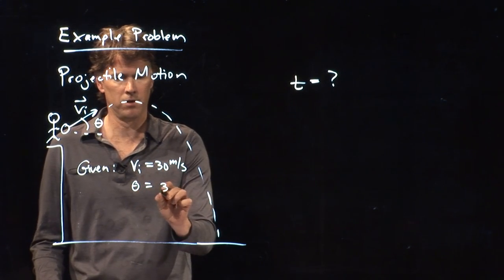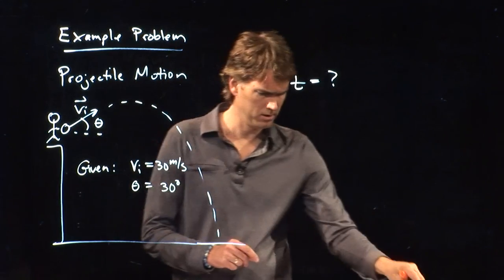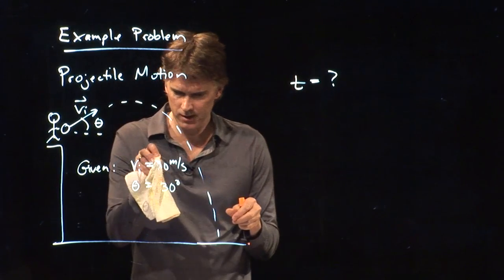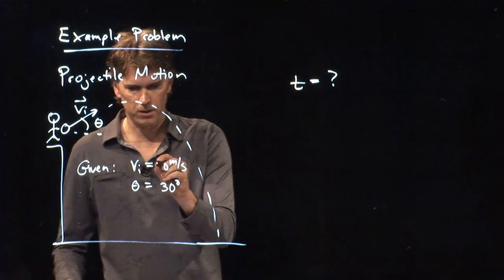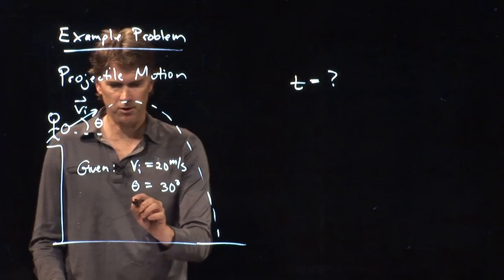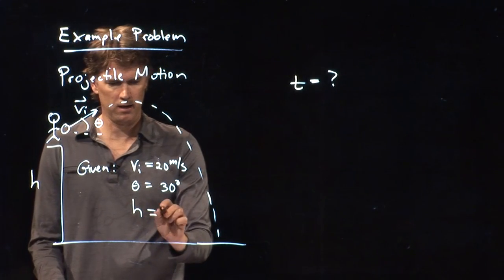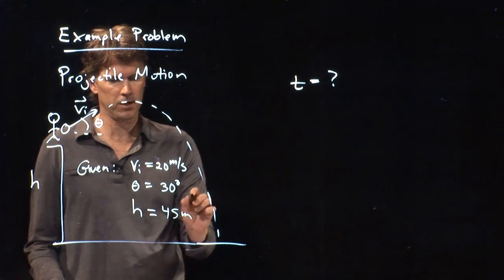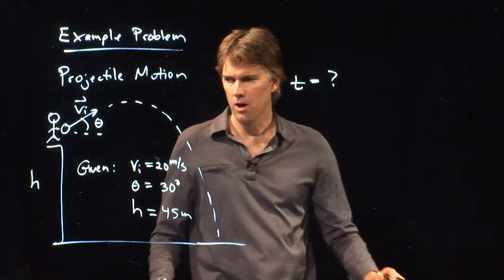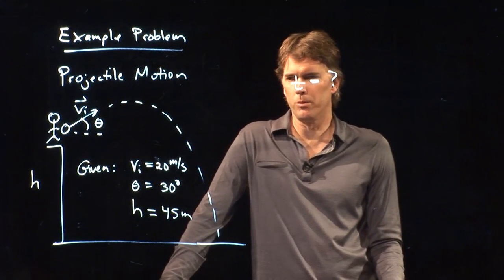We said that vi was 20 meters per second for vi. Theta was 30, and let's say that you're sitting up there at a height, 45 meters. What do we do?